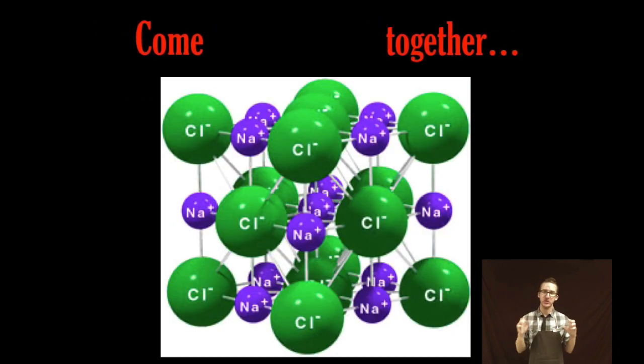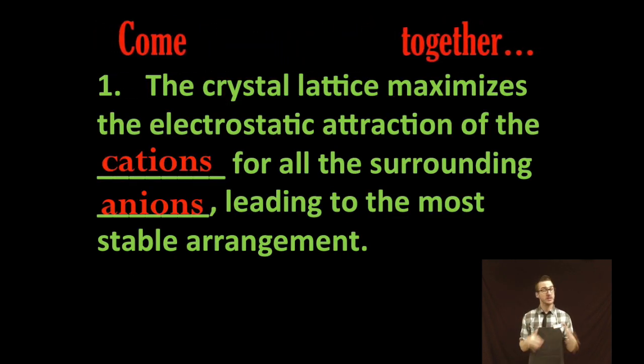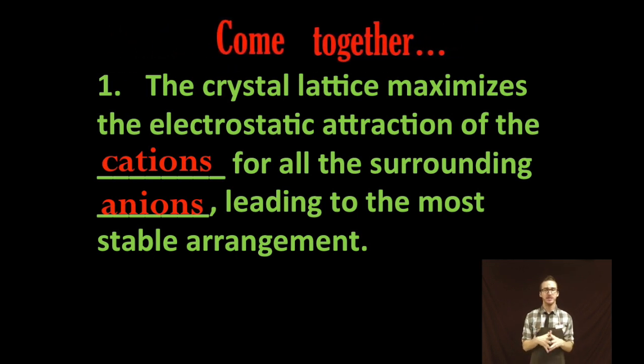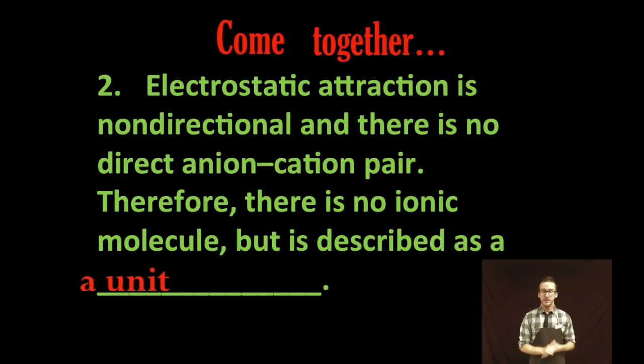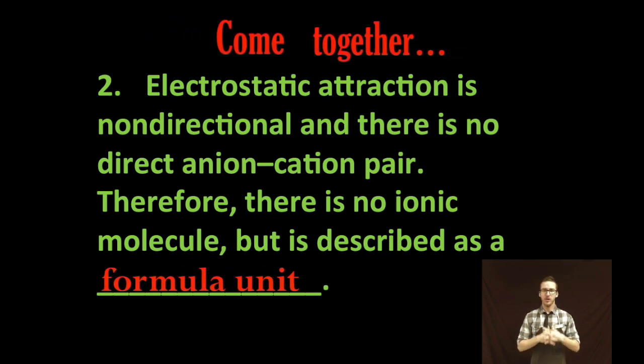And essentially it's this arrangement in the crystal lattice that maximizes the electrostatic attraction for the cations for all the surrounding anions leading to the most stable lowest energy arrangement. It's important to note that electrostatic attraction is non-directional and therefore there is no direct anion cation pair.